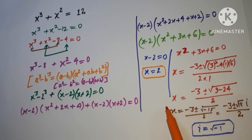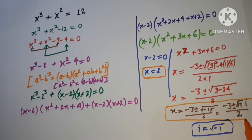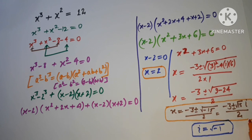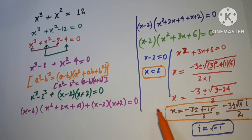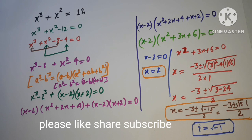So x = 2 and x = (-3 ± i√15) / 2 are the solutions; the two complex values are not real. Thank you so much for watching. For the latest upcoming videos, please subscribe to the channel and don't forget to hit the bell. Thank you!